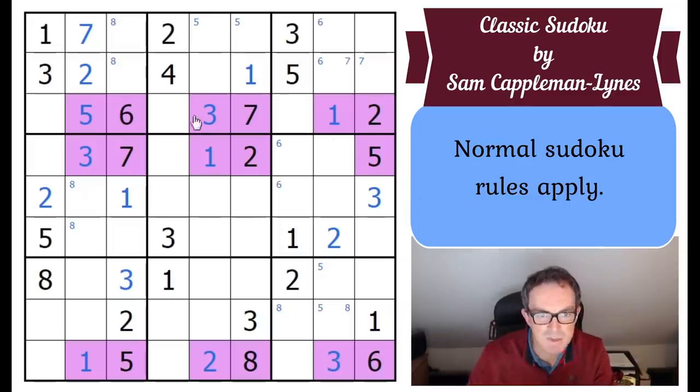And what do I mean by an x-wing? Well. Where does the four go in row three of the grid? It can only go in one of those two squares. Where does the four go in row nine of the grid? It can only go in one of those two squares. So this is an absolutely classic x-wing. The four is locked into exactly two positions in row three. And exactly the same two columns in row nine.